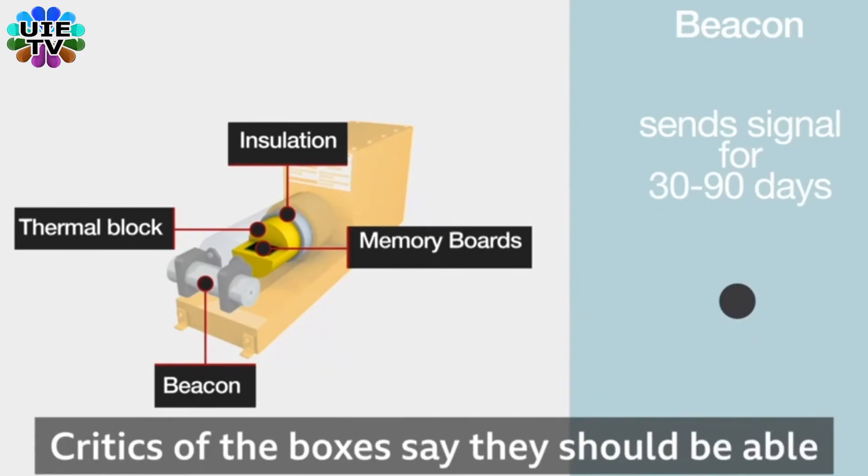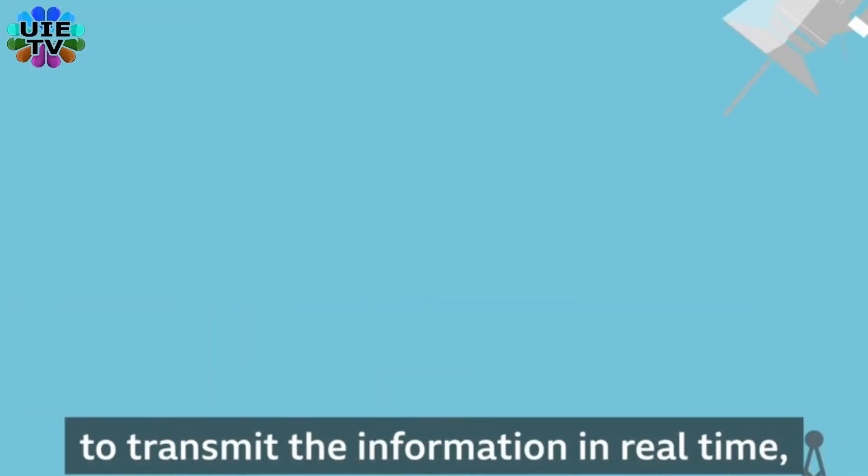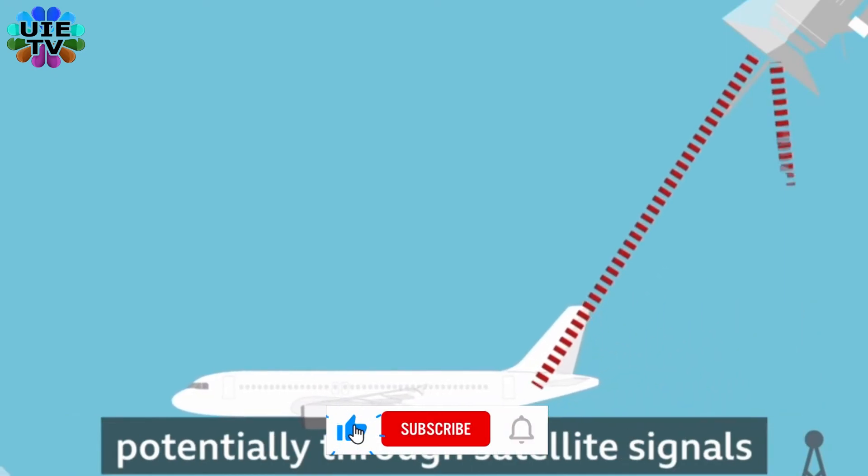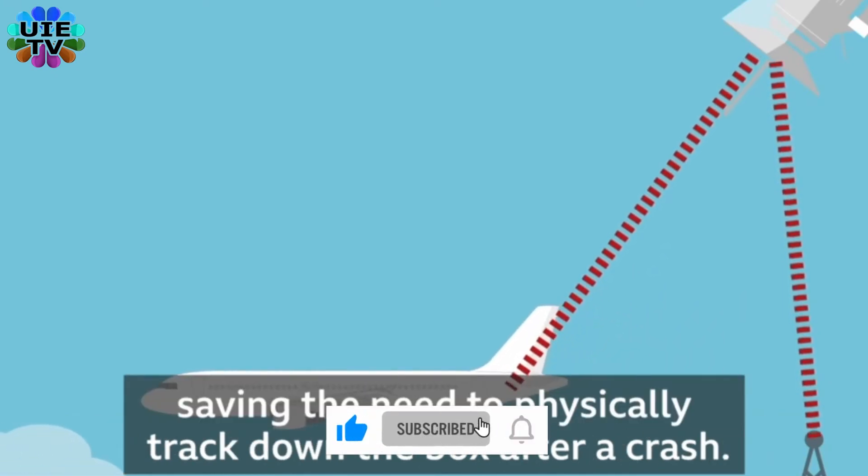Critics of the boxes say they should be able to transmit information in real-time, potentially through satellite signals, saving the need to physically track down the box after a crash.